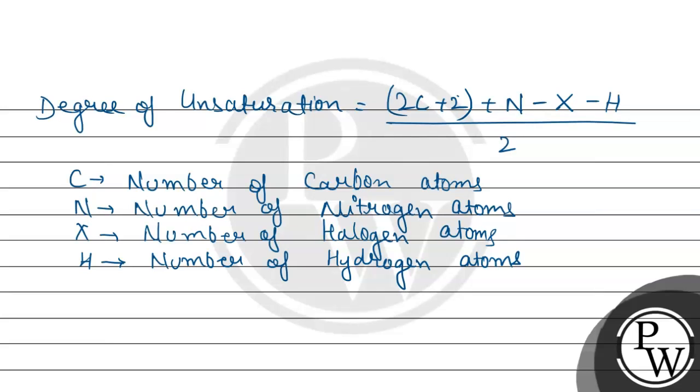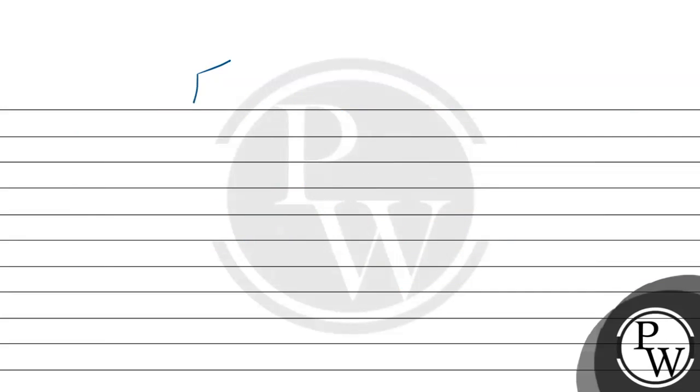Now, let us see the given compound. Here it has carbon triple bond N and COCl. Now let us use this formula, 2 multiplied by the number of carbon. Let us count the number of carbon: 1, 2, 3, 4, 5, 6, 7, 8. So there are 8 carbon atoms.